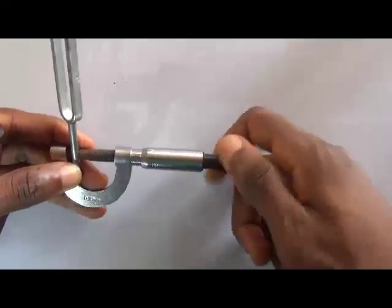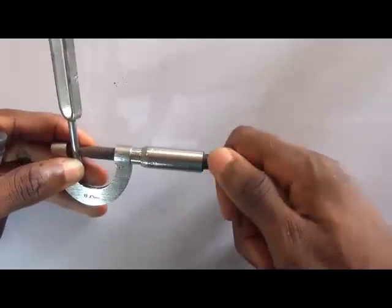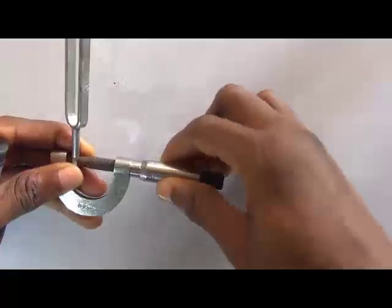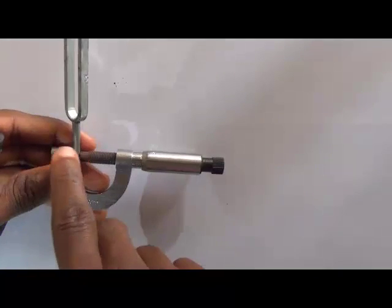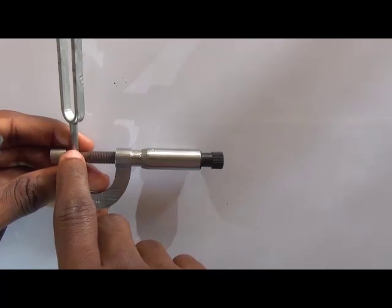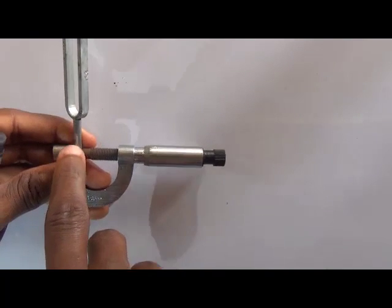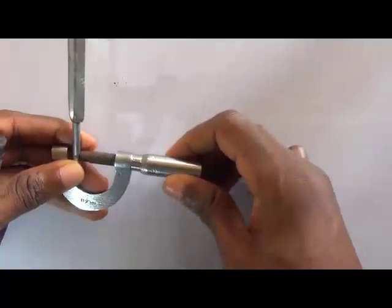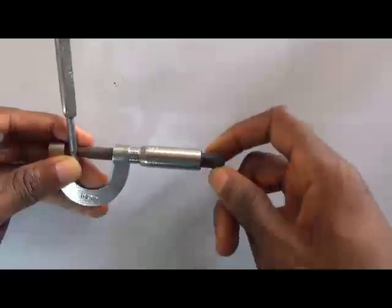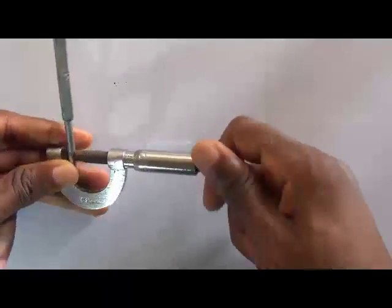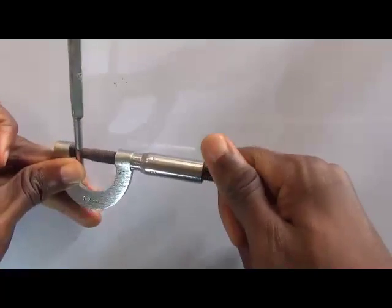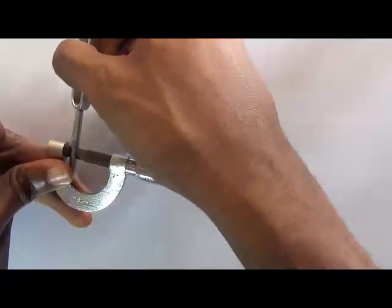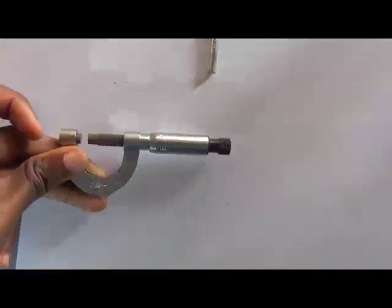No matter how I turn the ratchet, it will not move. But if I turn this knob, I will be forcing it, and that could damage these objects. If it were a flexible object or something that can easily break like glass, by turning this thimble itself, it could break the glass. That's why the ratchet is provided. So when I turn the ratchet and I make sure there is a firm grip here, then I can remove my hand from it and take away the object.